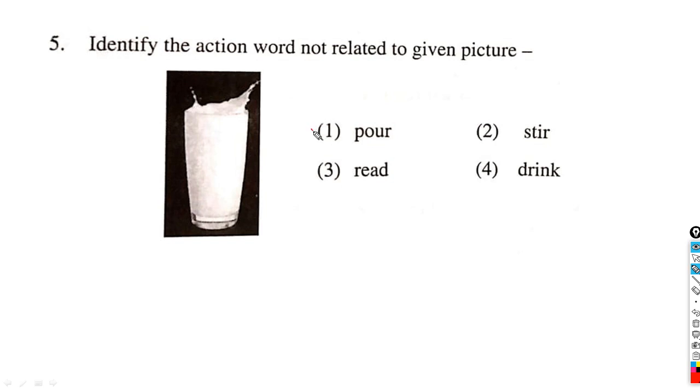First, pour - matlab kuch cheez dubi hui hai. Hume dikh raha hai. Ise hum drink kar sakte hai. Ise hum steal kar sakte hai. Shri ka matlab ise hume kuch halchal ho rahi hai, toh yeh bhi correct hai, yeh bhi ek action hai. But read - read is not an action. So the wrong word is read, it's the wrong action in this given picture.